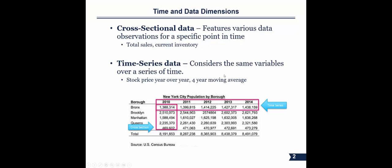Everything we've done in class so far has been about cross-sectional data. For example, the population of New York City — looking at 2010, this is a snapshot at a moment in time, like December 31st 2010, showing the population of all the boroughs: Bronx, Brooklyn, Manhattan, Queens. Time series data is different — instead of looking at every borough at one moment, we look at just the Bronx and how its population changes over time.